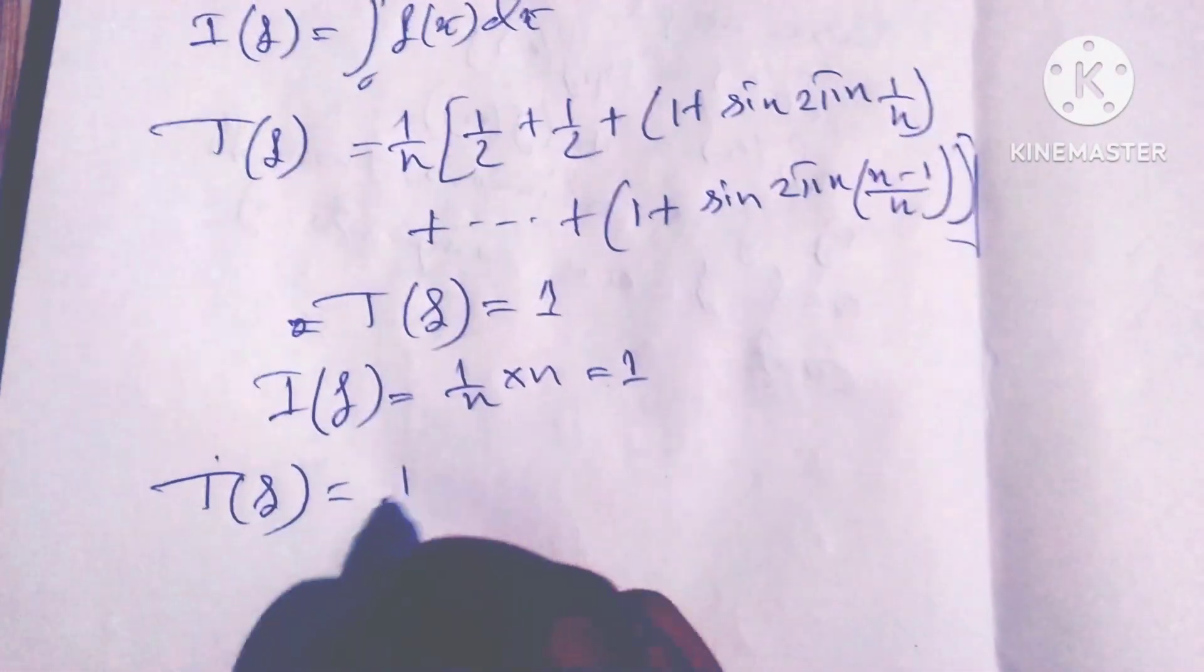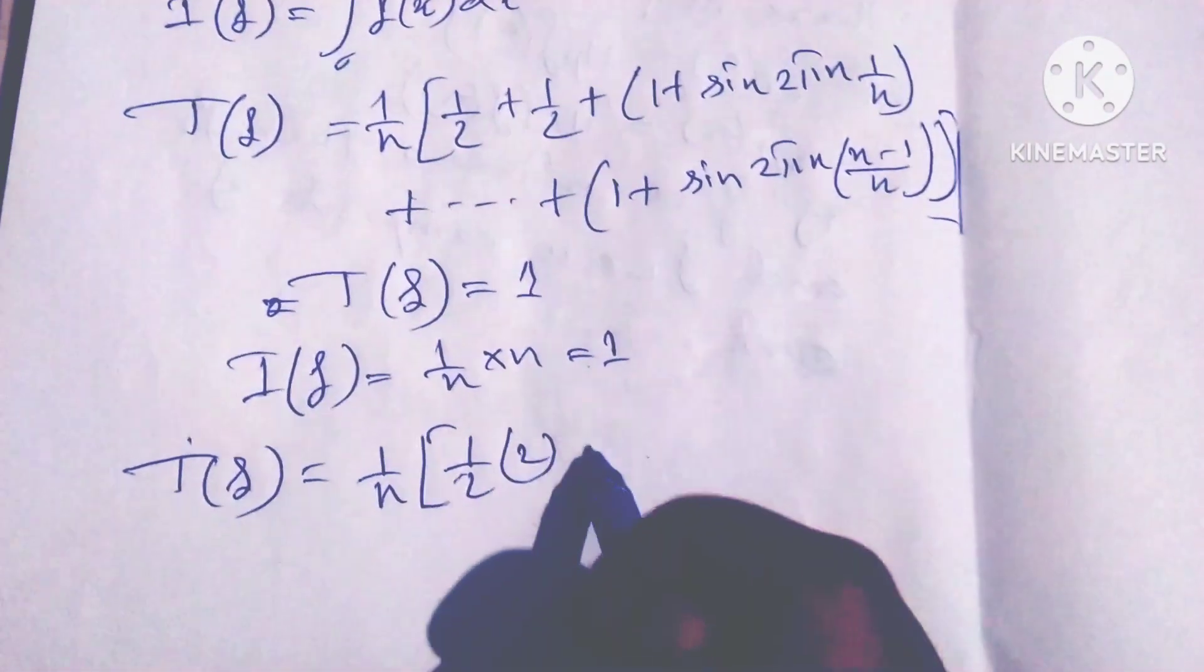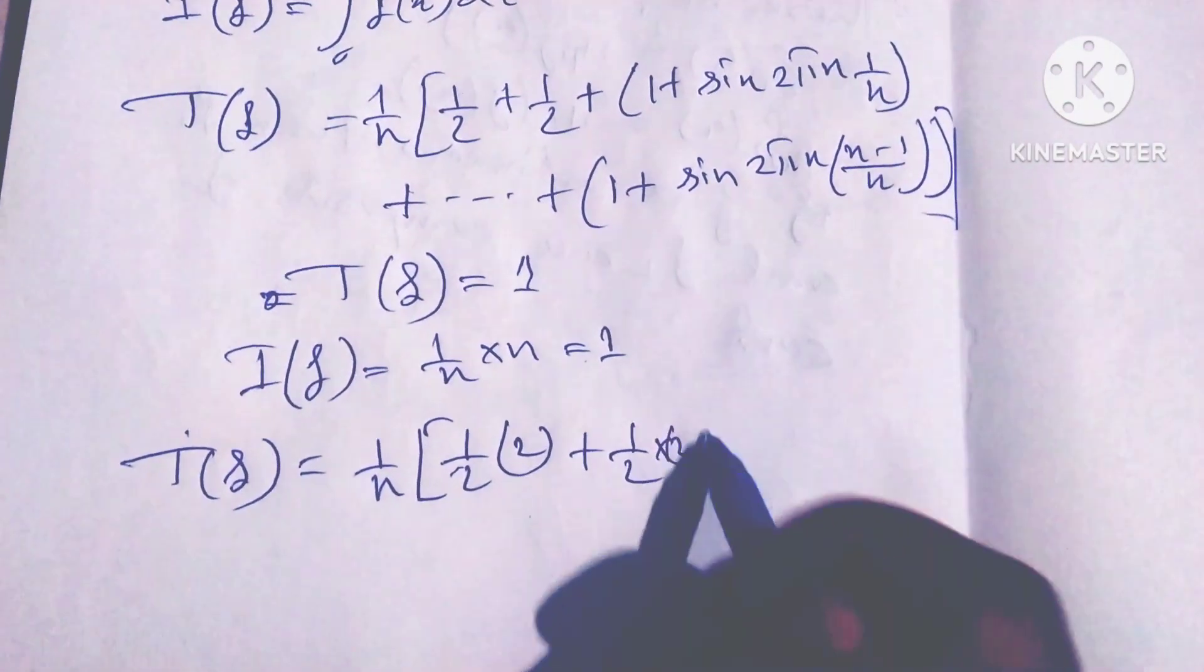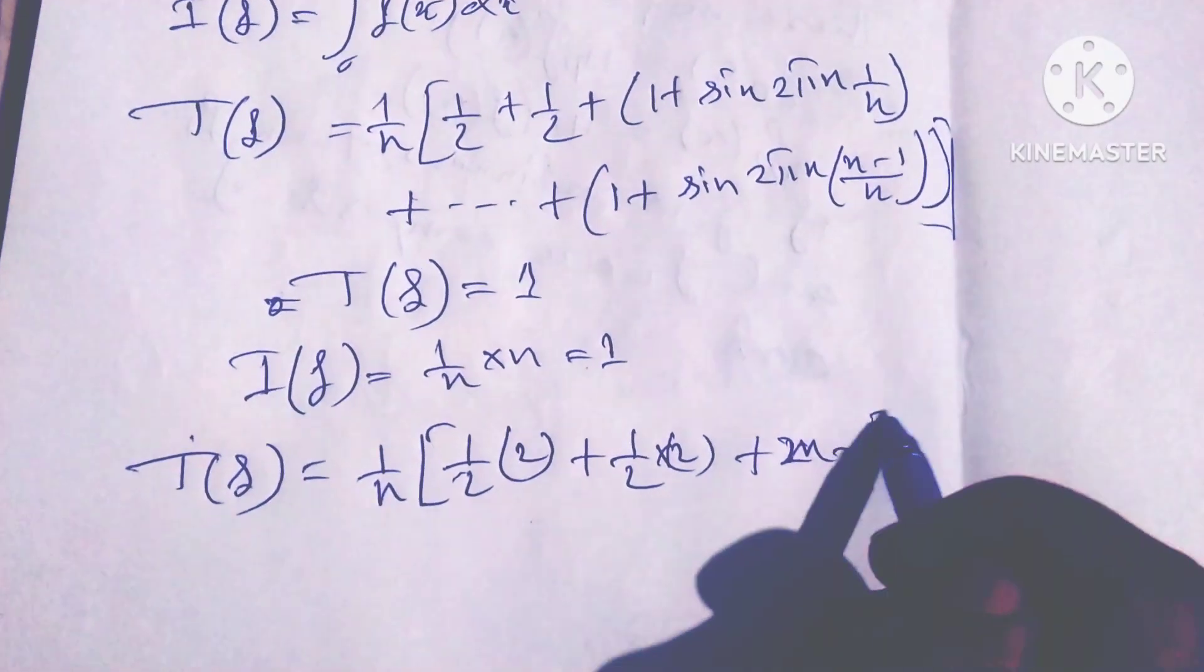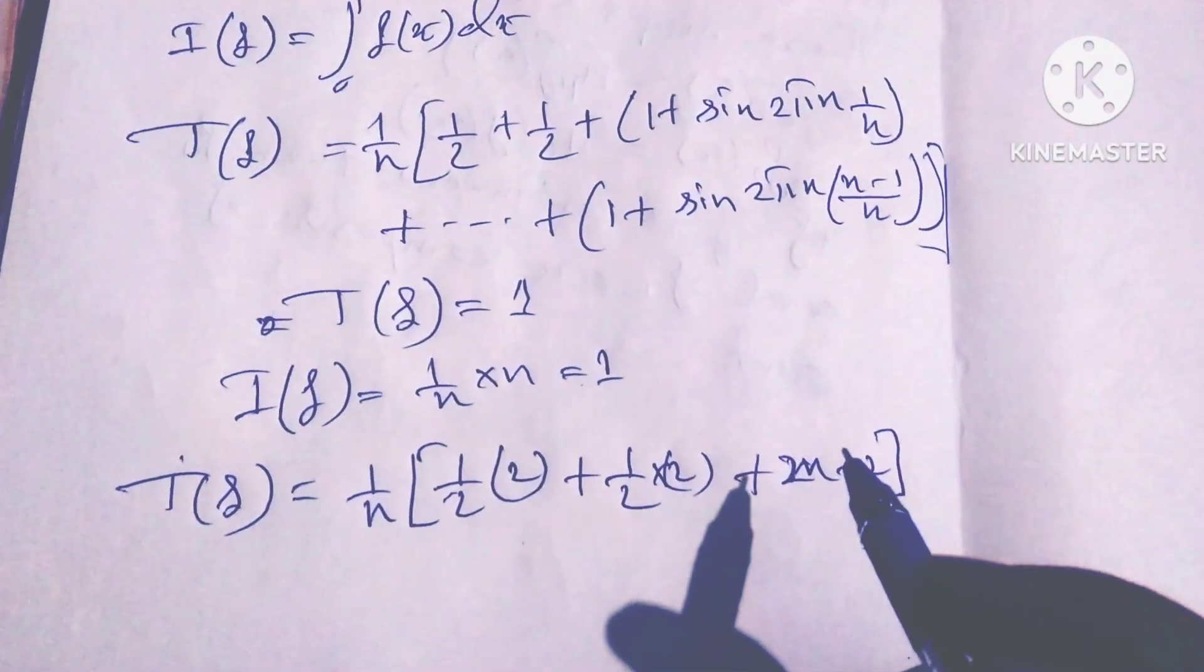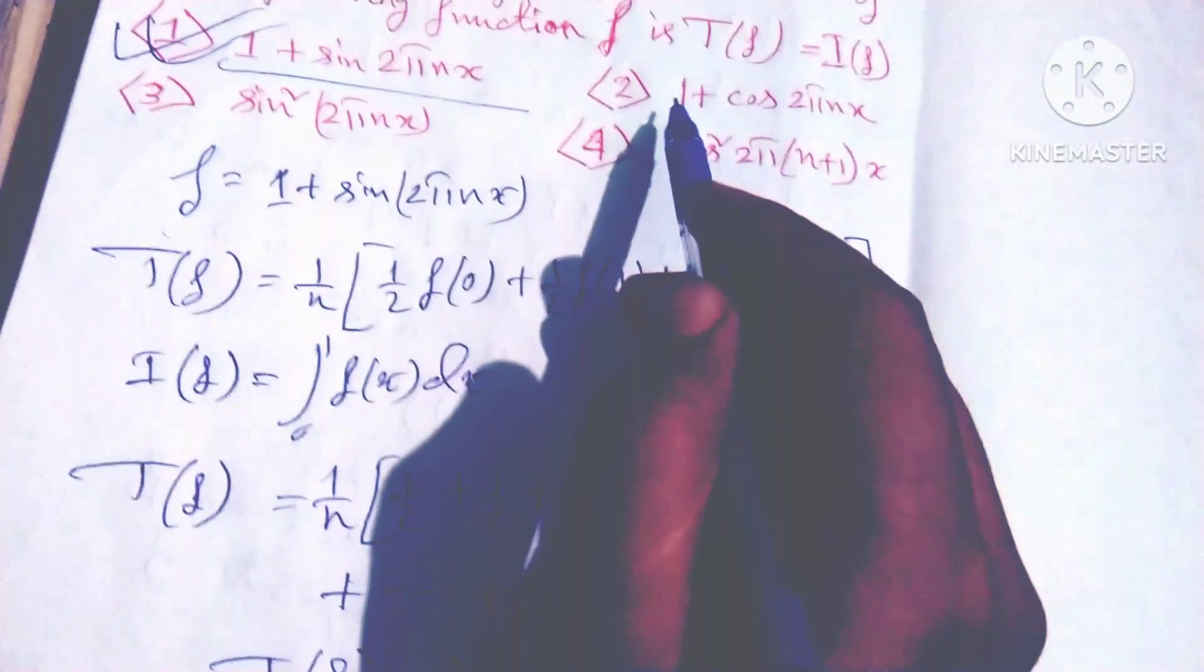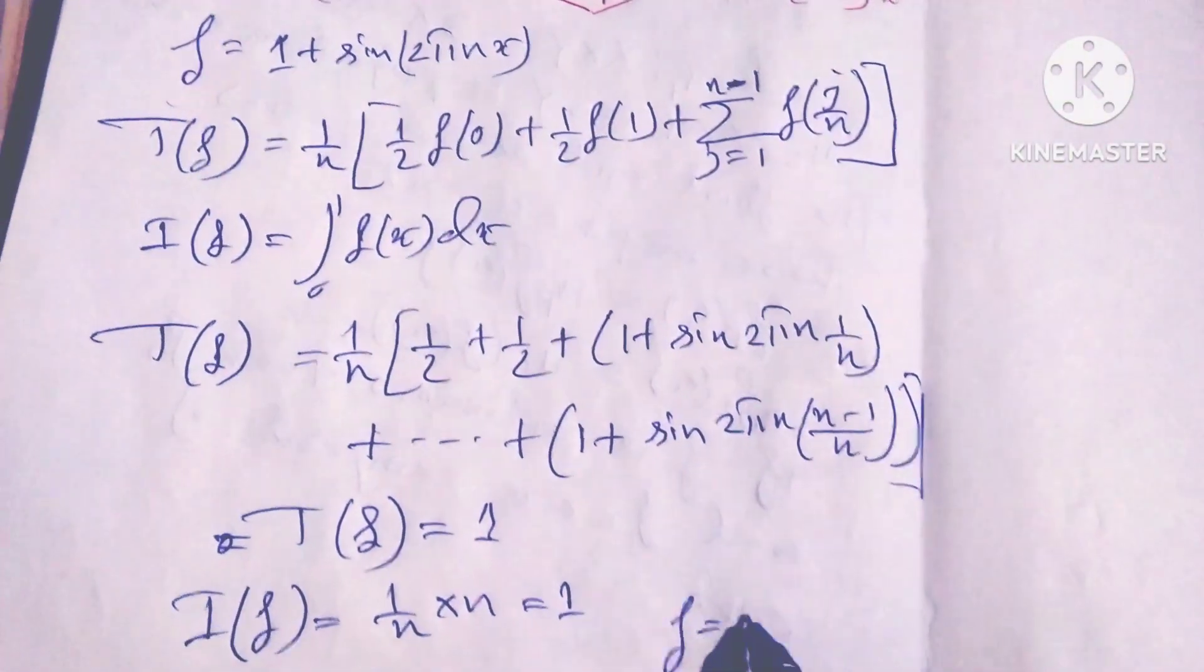T(f) equals 1 by n times u² by n plus 1 by n times [½ times 2 plus ½ times 2] plus 1 by n minus 2, in the case of the first case when...